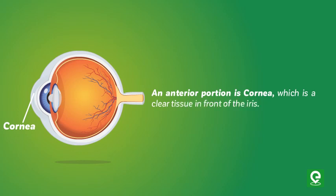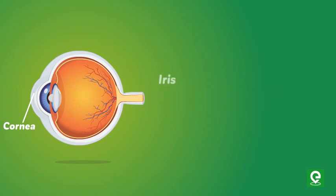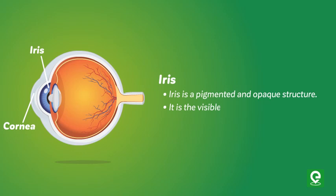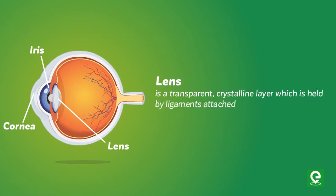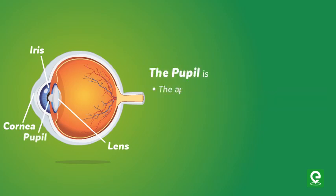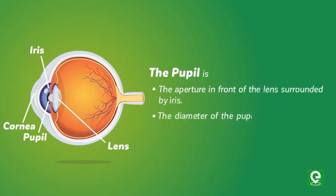The anterior portion of the eye is covered by the cornea, which is a clear transparent tissue in front of the iris. The iris is a pigmented and opaque structure — it is the visible colored portion of an eye. The lens is a transparent crystalline layer held by ligaments attached to the ciliary body. The pupil is the aperture in front of the lens, surrounded by the iris.